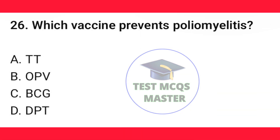Question number 26. Which vaccine prevents poliomyelitis? The correct option is B — OPV.